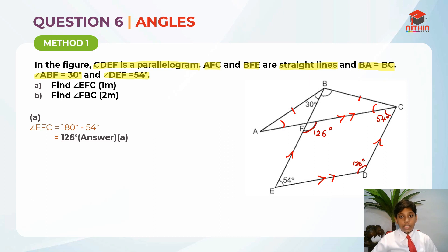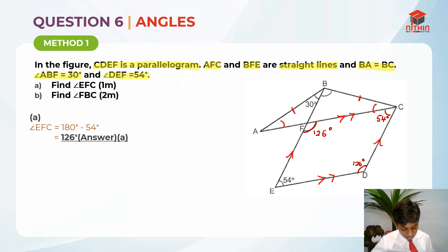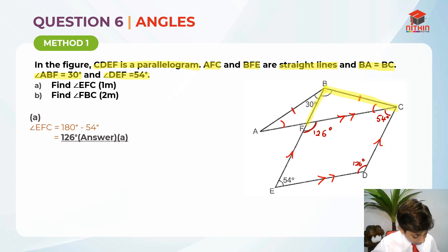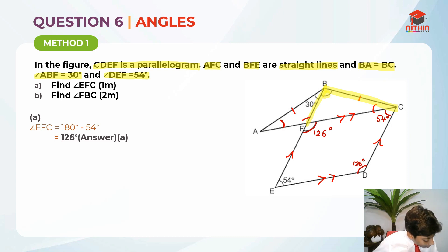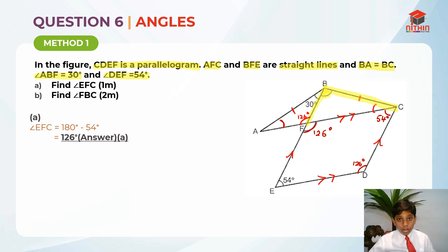Part B asks us to find angle FBC. This is where method 1 comes in. At point F, the angle on the other side is also 126 degrees — and I'll explain why using the property of vertically opposite angles.